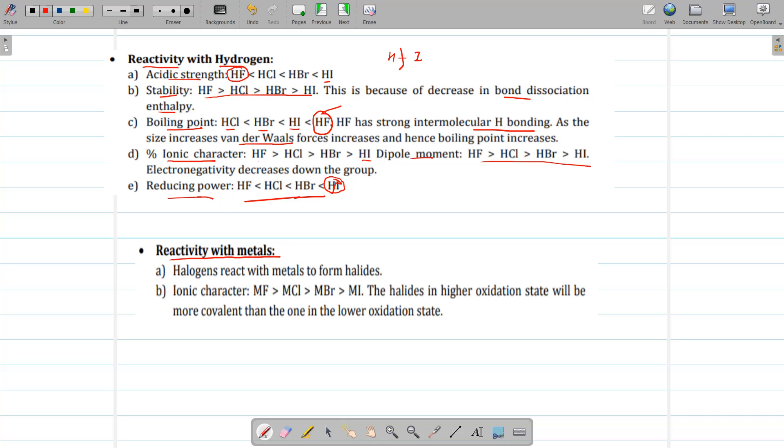Then next property is reactivity with metals. Halogens react with metals to form halides, metal halides. And ionic character of metal halides decreases as we move from fluorine to iodine. Why is it so? Because iodine size is bigger, so it is having more polarizability. That's why it is more covalent rather than ionic. And halides in higher oxidation state will be more covalent than one in the lower oxidation state.